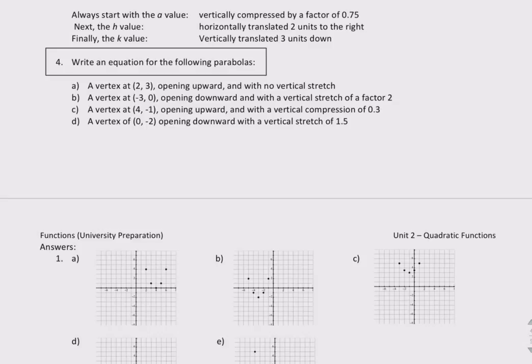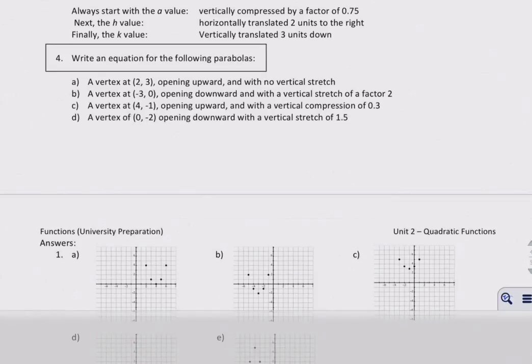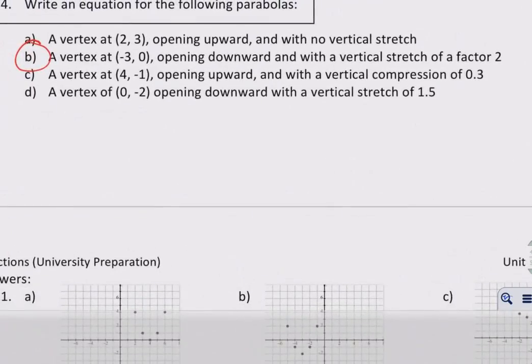Okay, so we're looking at b here. We're trying to find a parabola, the equation of a parabola with a vertex negative 3, 0, opens down, and it has a vertical stretch by a factor of 2.